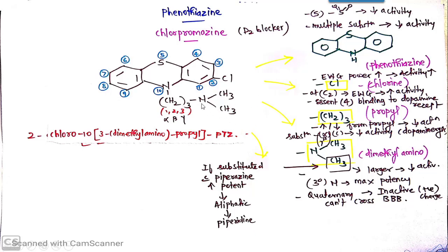This is a substituent which is dimethyl amino. This NH2 is there but the hydrogen, both hydrogens are replaced by alkyl group. There should be presence of some substituent. In case of chlorpromazine there is methyl. If larger group is substituted then it leads to decrease in activity.